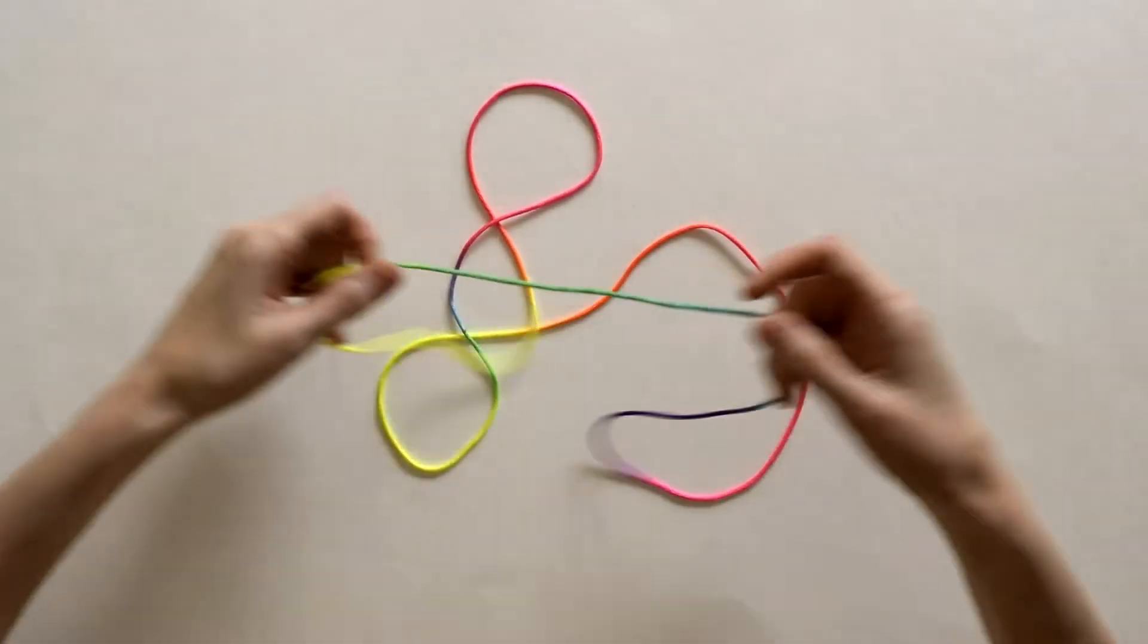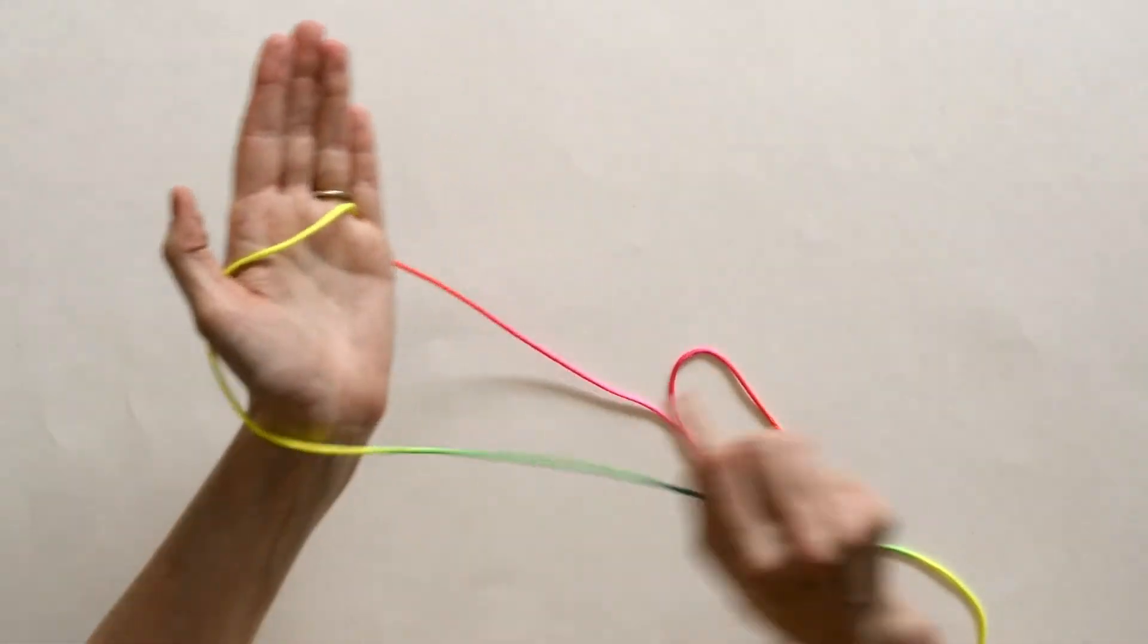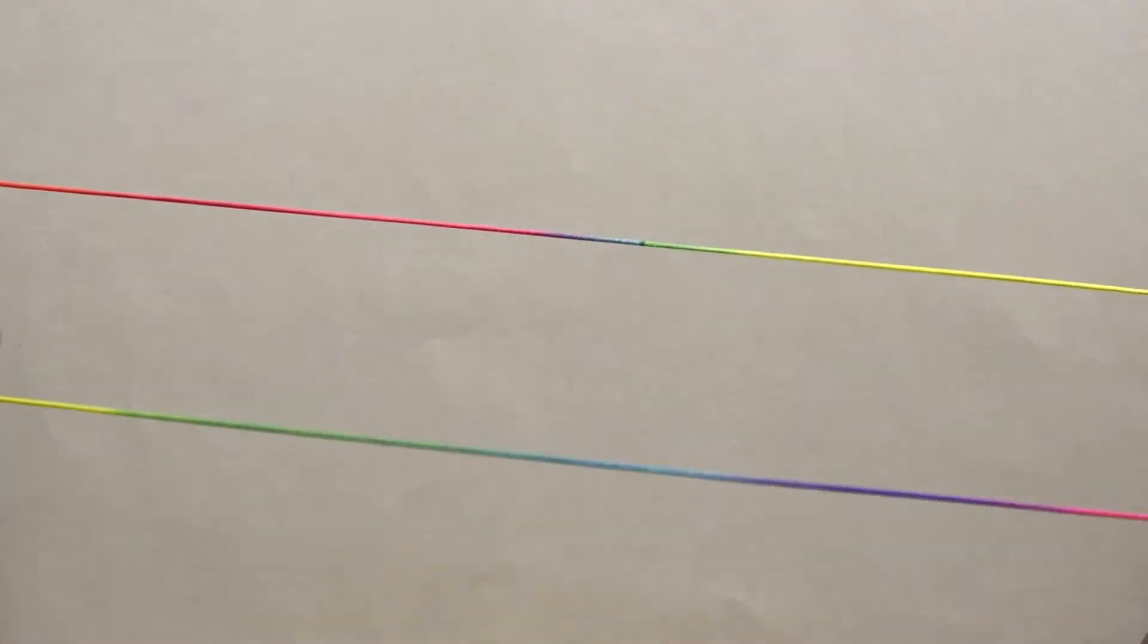In this video I will show you how to do the running caribou. First take your string and make a left palm loop. Then make a right palm loop so when you stretch your strings out there's no crossing.